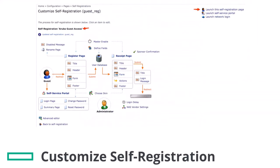You will see the configured self-registration page with its hierarchy, and the properties of the page can be modified from here. On the upper right corner, click on Launch This Self-Registration Page to view the registration form.